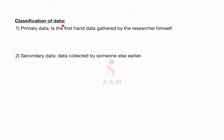Classification of Data: As we know, data can be primary and secondary data. Primary data is first-hand data gathered by the researcher himself. For example, survey, group discussion, questionnaire, etc.